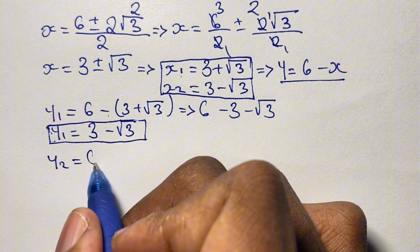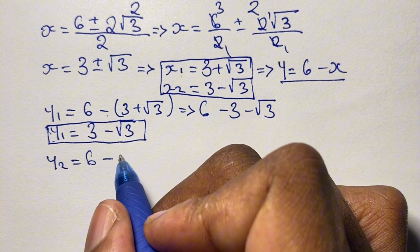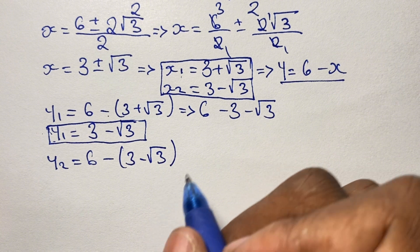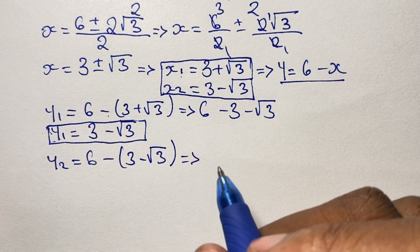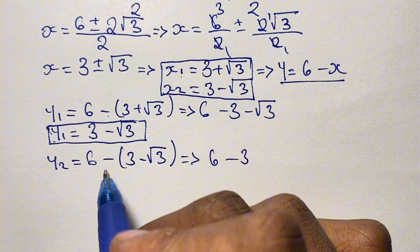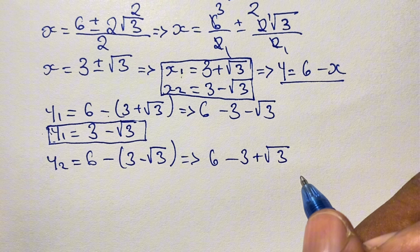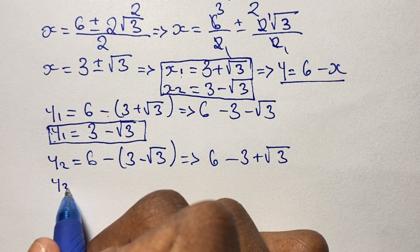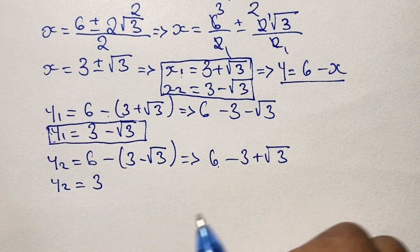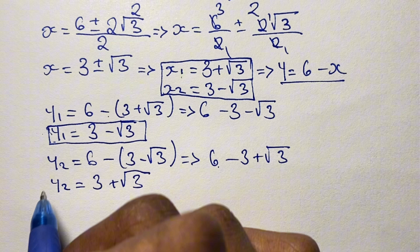Our second solution for y is y equals 6 minus x₂, which is 3 minus the square root of 3. Evaluating: negative 1 times 3 gives negative 3, and negative 1 times negative square root of 3 gives positive square root of 3. So we have 6 minus 3 plus the square root of 3. Since 6 minus 3 is 3, our second solution is y₂ equals 3 plus the square root of 3.